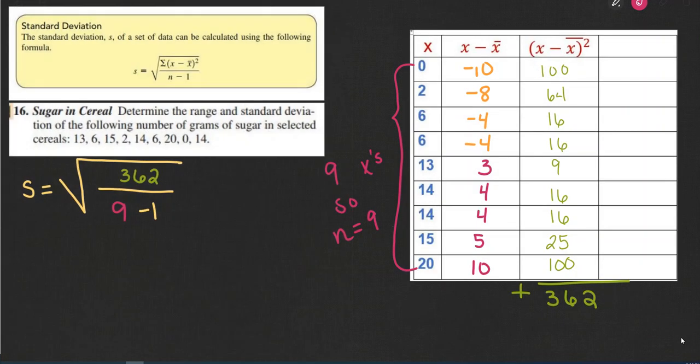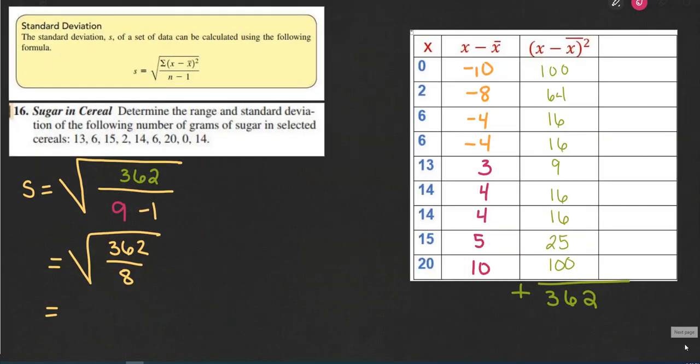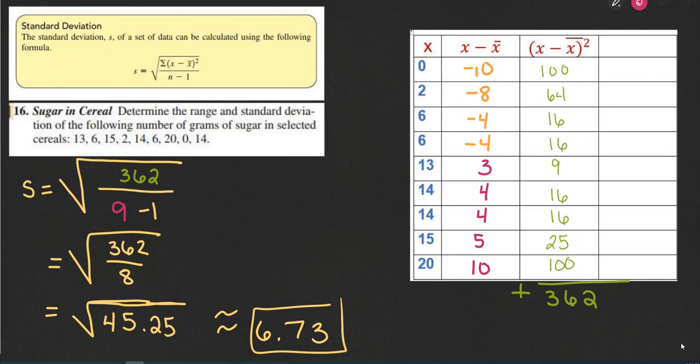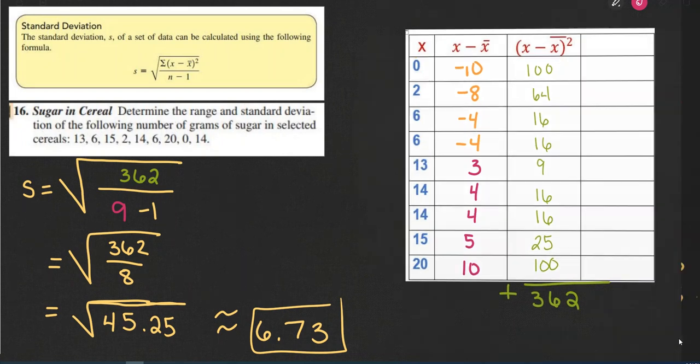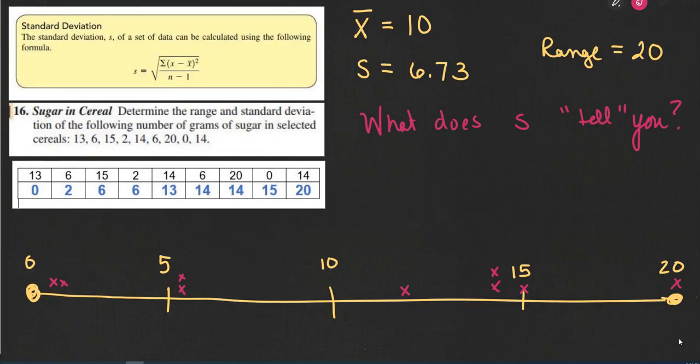The next step is to apply the formula. So we're going to put our sum in the numerator, and we're going to divide that by n minus 1. n is equal to 9 because, as you see over here, when we count the number of numbers, there were 9 x's from 0 to 20. So we're going to do 362 divided by 8, and that number is 45.25. Square root it, and we've got our standard deviation. I'm going to round that to two decimal places, and that gives us an approximate standard deviation of 6.73.